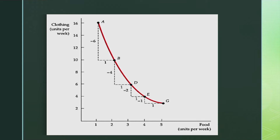People always face trade-offs. If you have more of one good, then you can only have less of another. I will explain this on the basis of a figure. Suppose there are only two goods, food and clothing. At point A, there are 16 units of clothing and 1 unit of food, as can be seen in the figure.